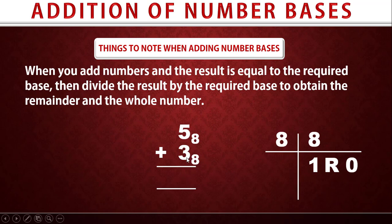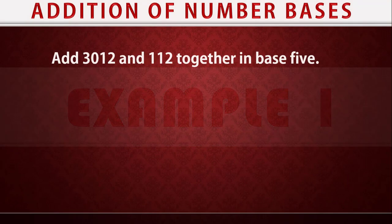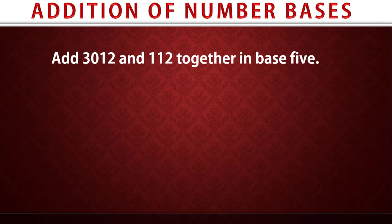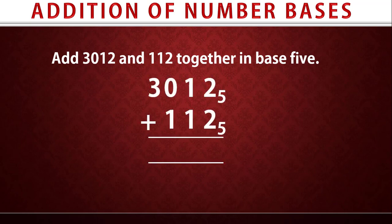Instead of writing eight for five plus three, we write down zero. The whole number one is carried to the next stage of addition. If there is no next stage, we write the one as the final digit. Now let's look at Example 1: add 3012 and 112 together in base five. We write out 3012 plus 112, all in base five.